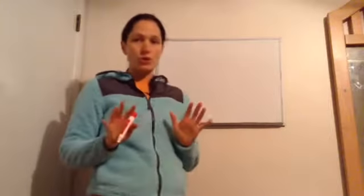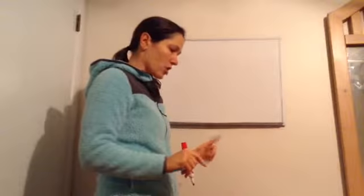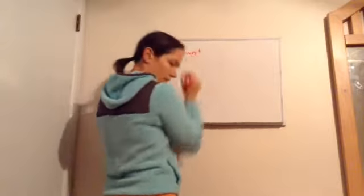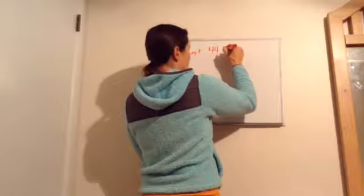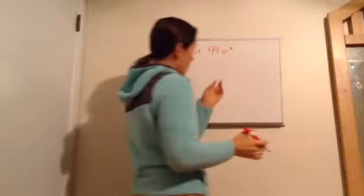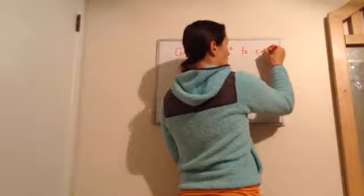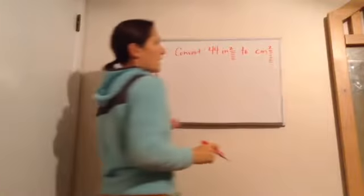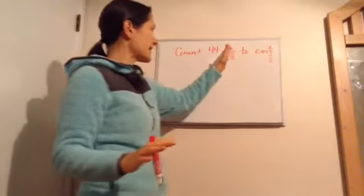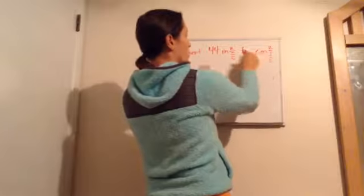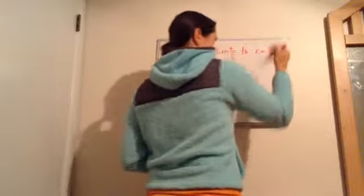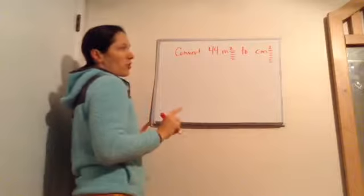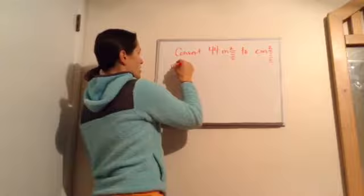Now let's talk about conversions of area. We're going to use unit multipliers — we've talked about that, but let's go a bit deeper. The problem asks us to use 2 unit multipliers to convert 44 square inches to square centimeters. It's very important to realize we're not just converting 44 inches to centimeters — we're converting 44 inches squared to centimeters squared.